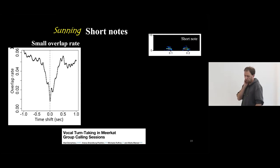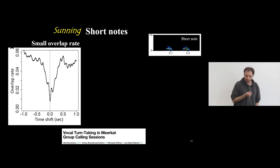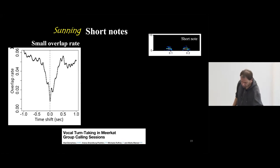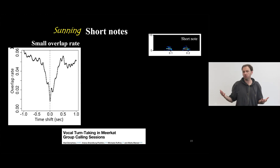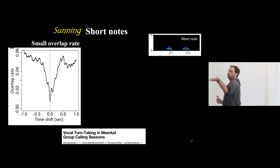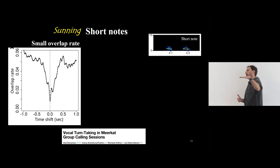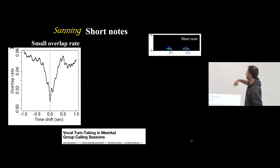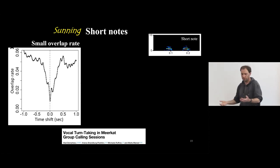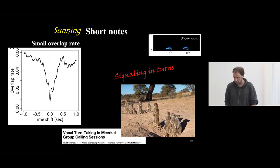An interesting detail about short note calls: Ari and I previously looked at sunning short note calls and showed that they do not overlap. At time zero on the plot, there are low levels of overlap between individuals. When we artificially shifted the call times of one individual back and forth, overlap rates spiked — shown by the curves on either side. So meerkats do seem to avoid calling simultaneously with others and tend to turn-take during the sunning behavior.